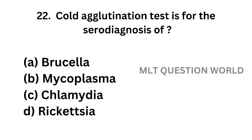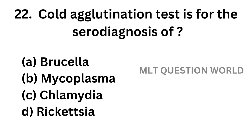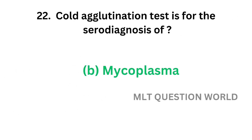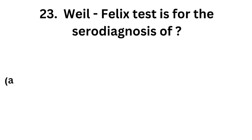Question number 22. Cold agglutination test is for the serodiagnosis of: Option A, Brucella; Option B, Mycoplasma; Option C, Chlamydia; Option D, Rickettsia. The correct answer is Option B, Mycoplasma. Cold agglutination test is for the serodiagnosis of Mycoplasma.